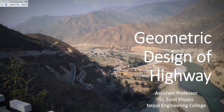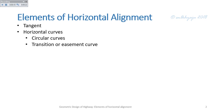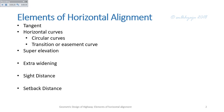Welcome back to the geometric design of highway. In this lecture, I will cover the elements of horizontal alignment. The elements of horizontal alignment are: tangent, horizontal curve (including circular curve and transition or easement curve), super elevation, extra widening, sight distance, setback distance, and cross resistance. Although super elevation, extra widening, and sight distance come under cross-section elements, we will deal with these parameters under elements of horizontal alignment.